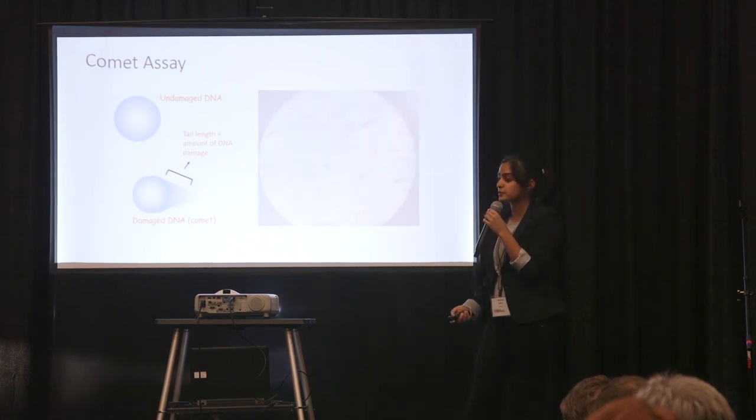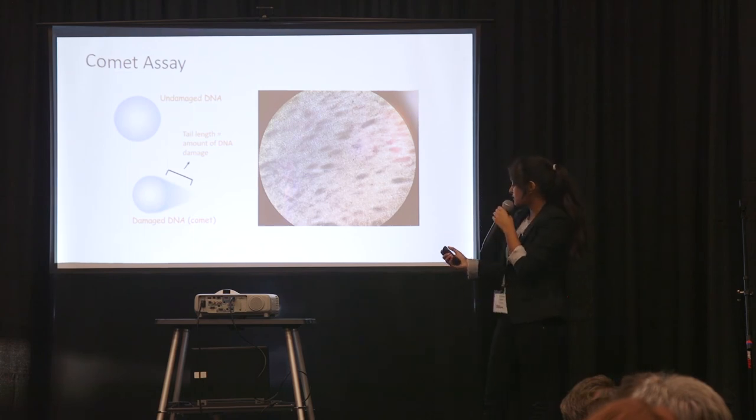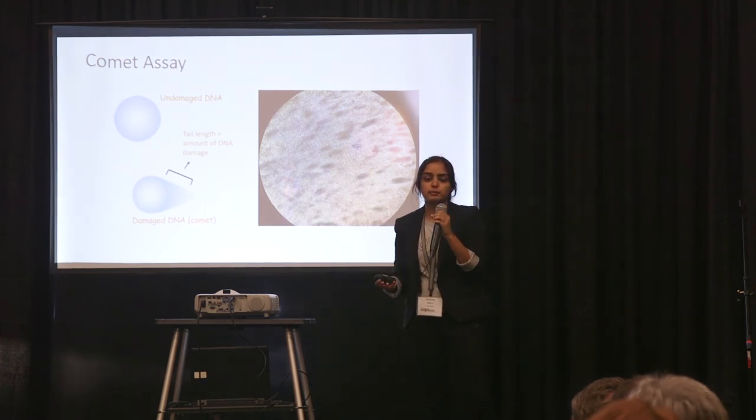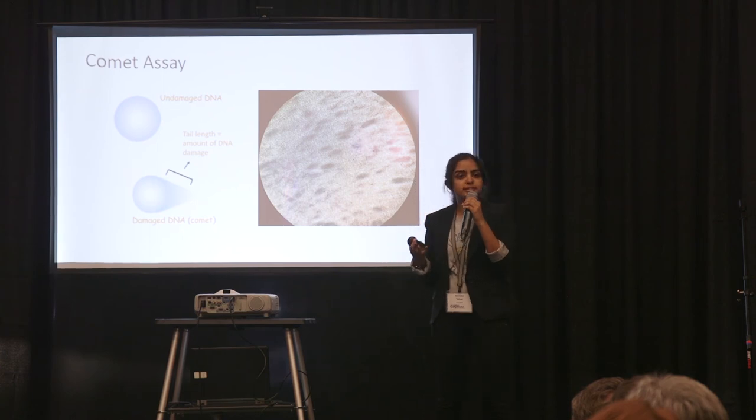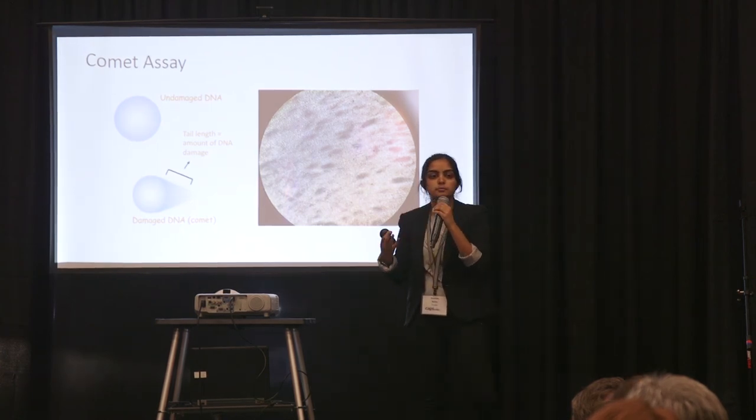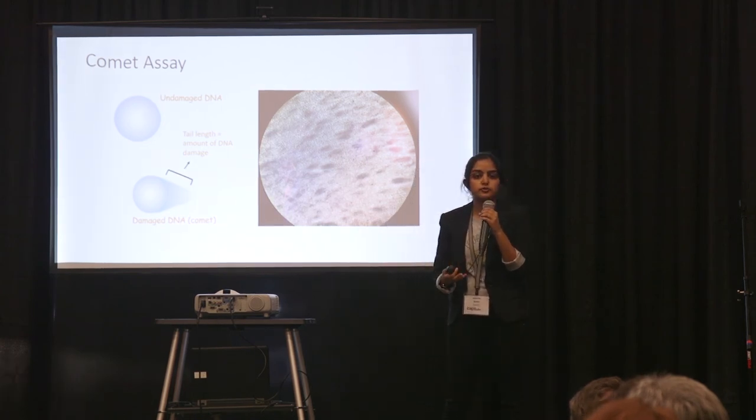So I actually was able to do this procedure with a tardigrade and you can see my results here. So each of these little black streaks is DNA damage. And the whole point of this experiment was to create a gold standard for a tardigrade, to find out which species has the highest rate of DNA repair and would be best to use for further research.